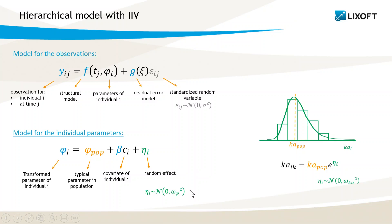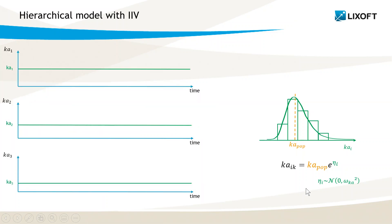The parameter can also be transformed to have a non-normal distribution. For example, here is the absorption rate Ka with a log-normal distribution and no covariate. This model with no occasion assumes that each individual Ka belongs to the population distribution defined with the fixed effect Ka_pop and the standard deviation of eta omega_Ka, and remains constant over time during the whole study, as displayed here for example for subjects 1, 2 and 3. Covariates would also need to be constant over time.